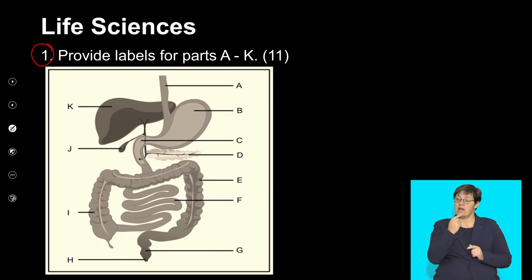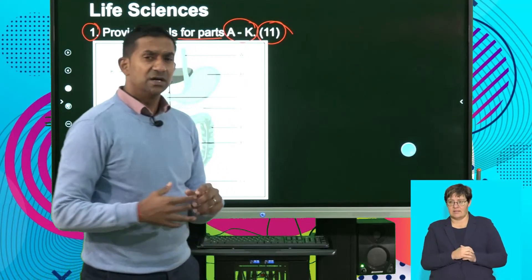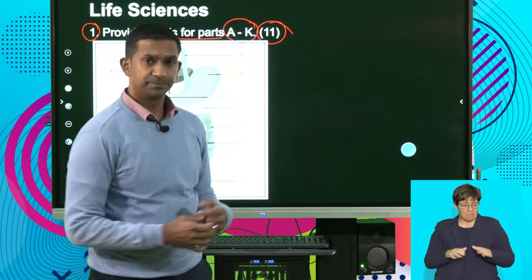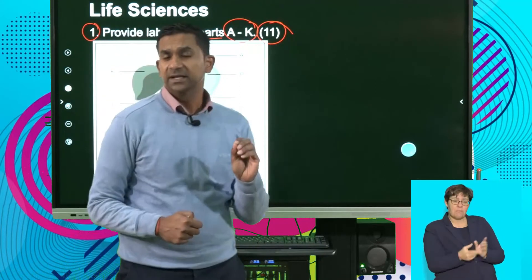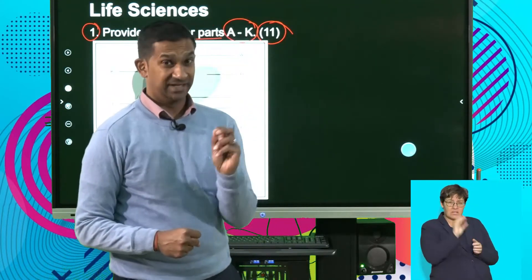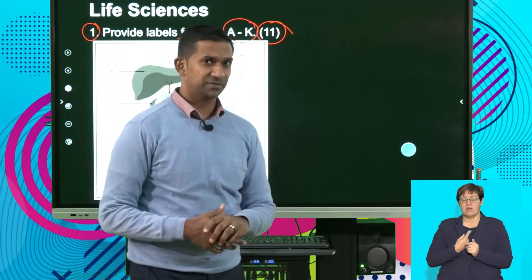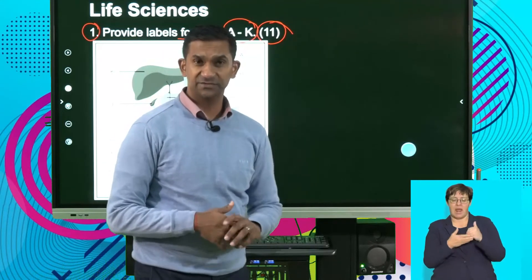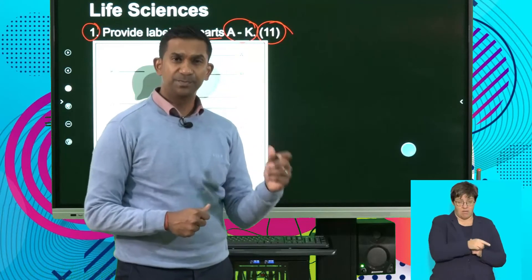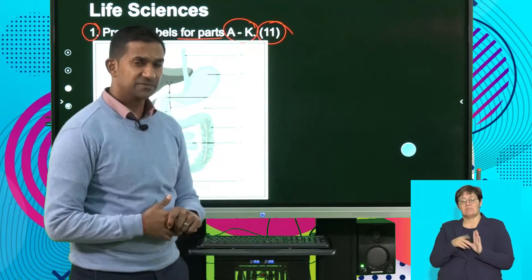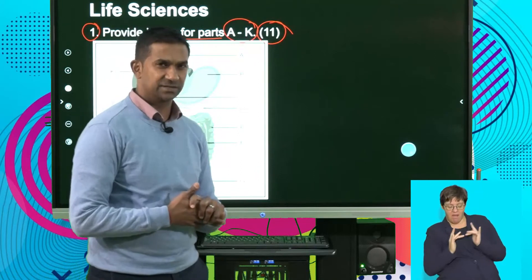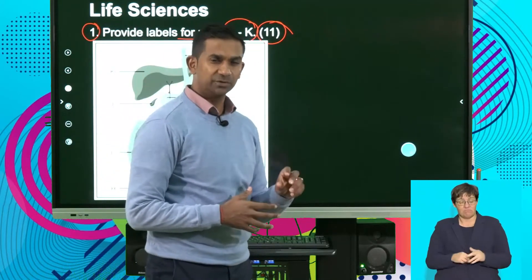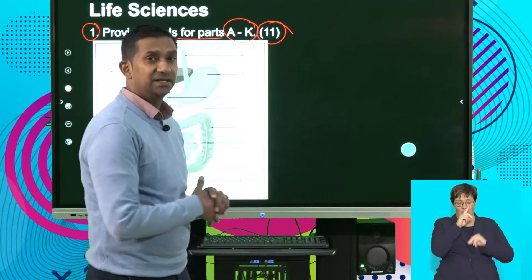Question one: provide labels for parts labeled A to K — 11 marks. Sometimes in an exam the examiner might ask you to label a few parts. I advise my learners that if you see a whole lot of labeled parts, quickly annotate the diagram by writing down the parts as soon as you see the labels. It helps you as you get into the rest of the question when you have to refer to the diagram. Let's label this diagram — it will help recollect the structure of the digestive system and remind you of the importance of using diagrams.